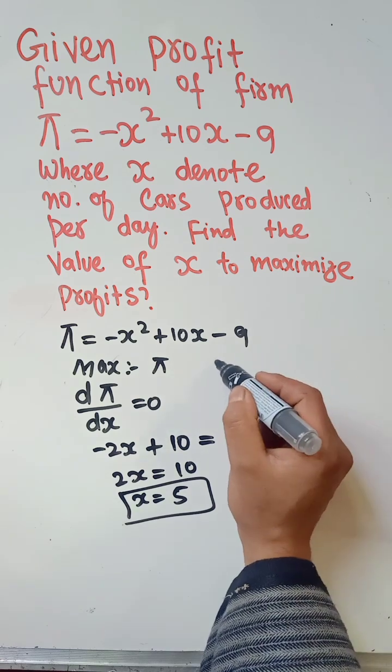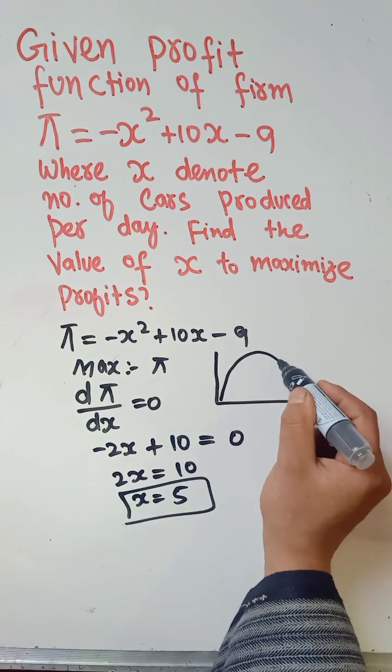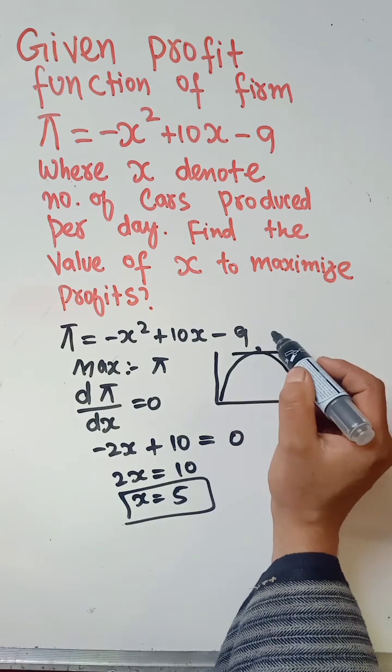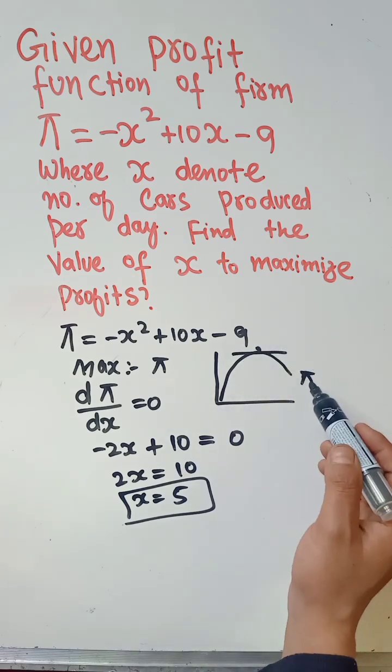Graphically, it simply means that given this profit function, profit will be maximum where the marginal profit is equal to zero.